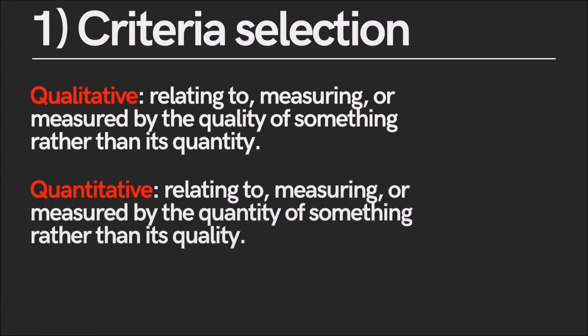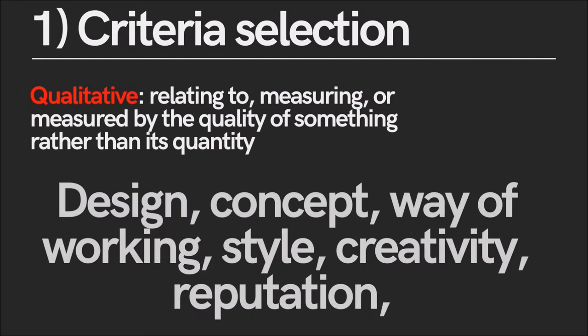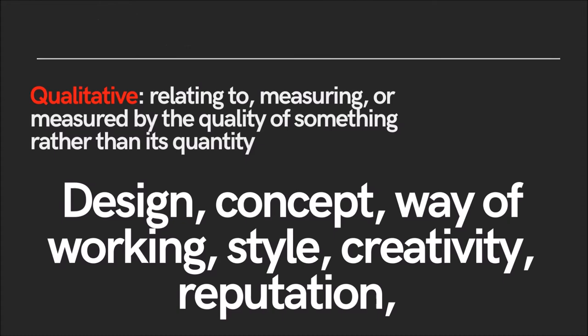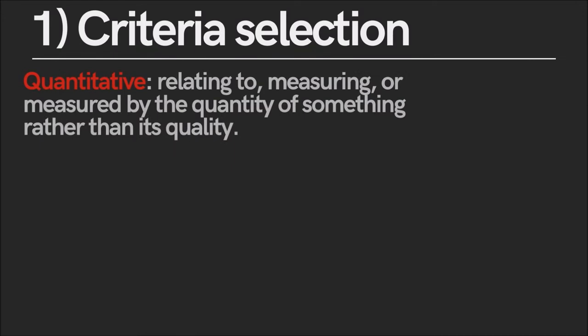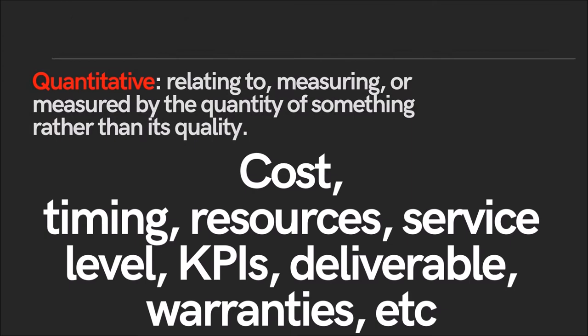Number one, define the criteria for selection. There are two types of criteria: qualitative, which focuses more on your perception, and quantitative, the ones that you can measure. In the group of qualitative criteria you can find creativity, design, concept, way of working, style, and even reputation. In the group of quantitative criteria you can find cost, timing, number of resources the supplier is applying, service level, KPIs, deliverables, guarantees, etc. — all criteria that you can compare because you can count them.